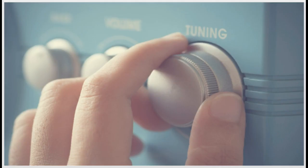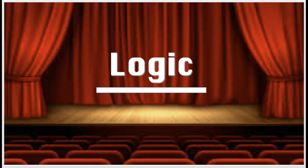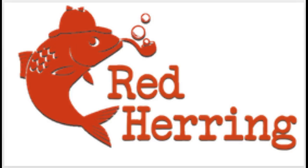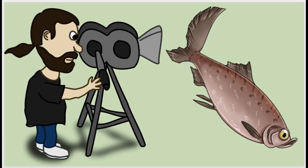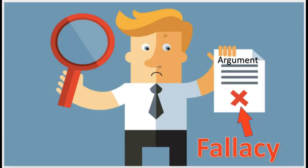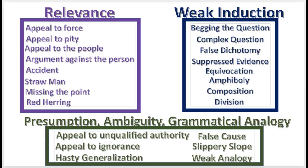Ladies and gentlemen, thank you for tuning in to this episode of Logic. The red herring fallacy is the topic of this video. As you know, a fallacy is an error or defect in an argument. Here is a list of some 22 informal fallacies covered in this series.